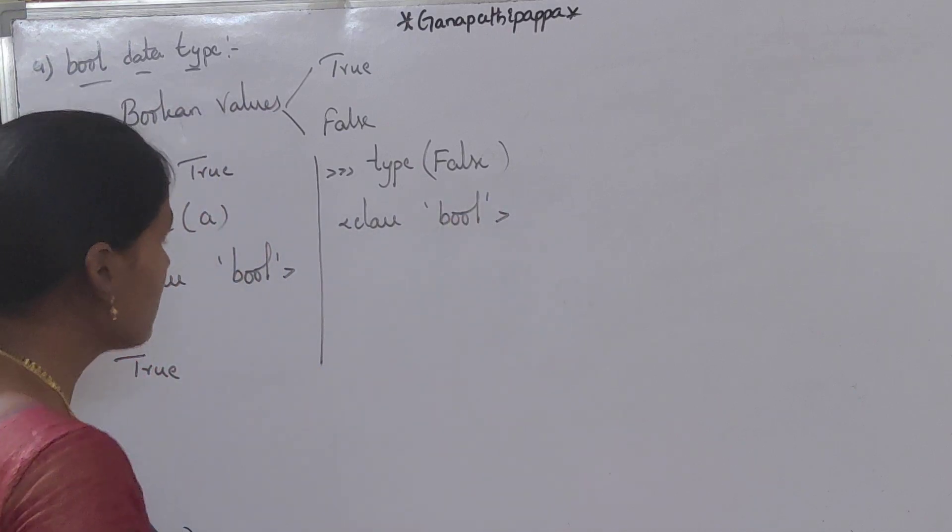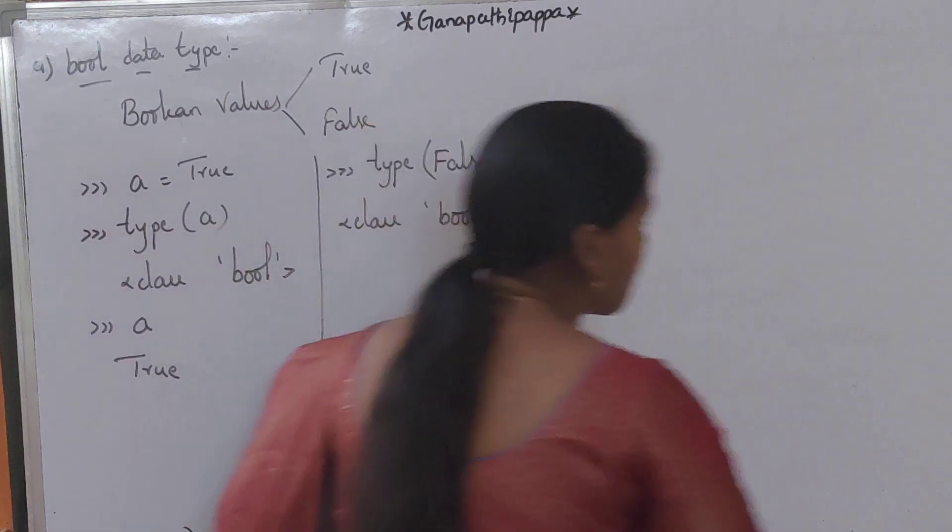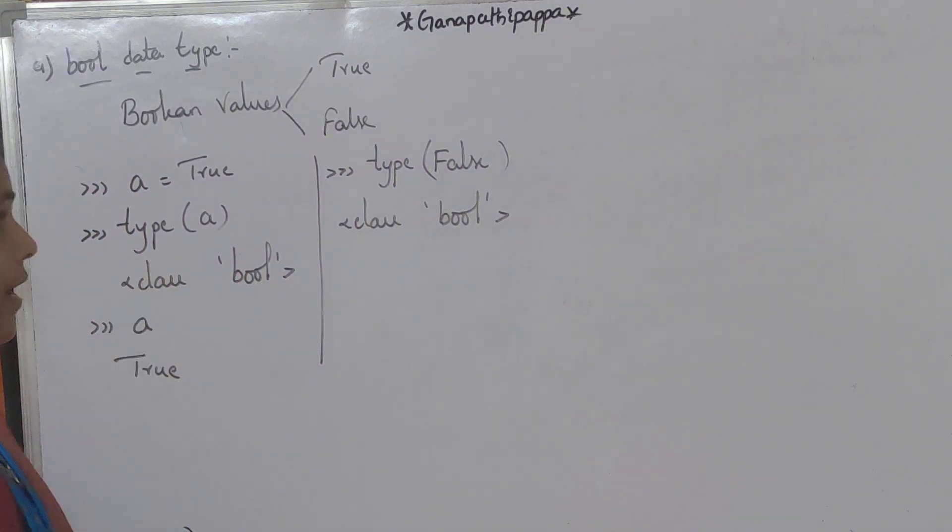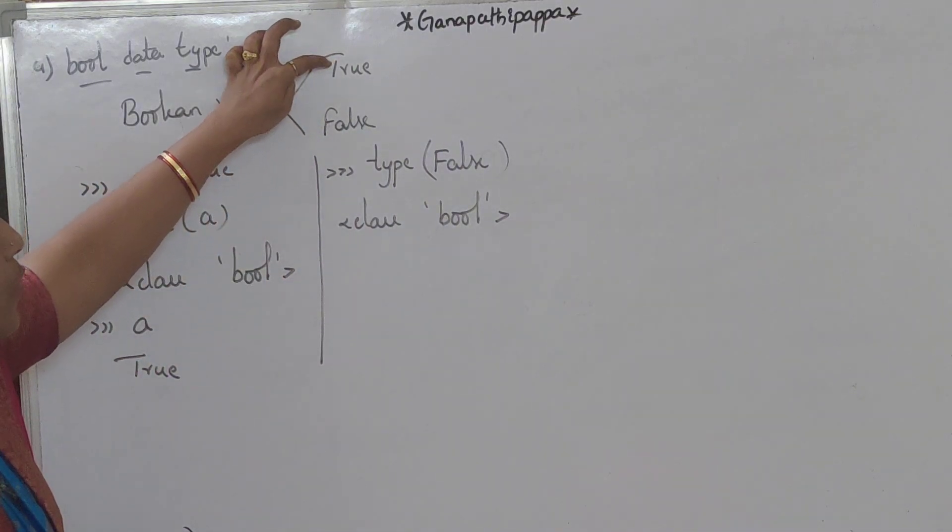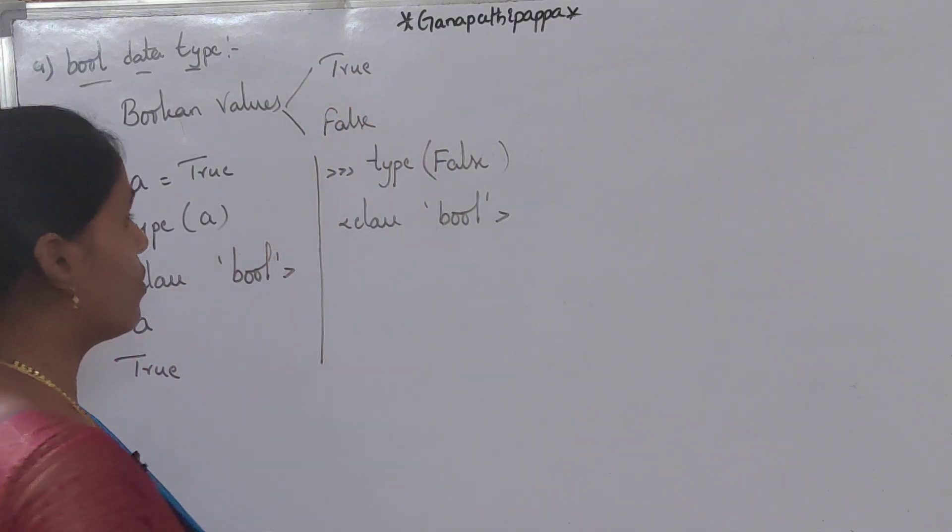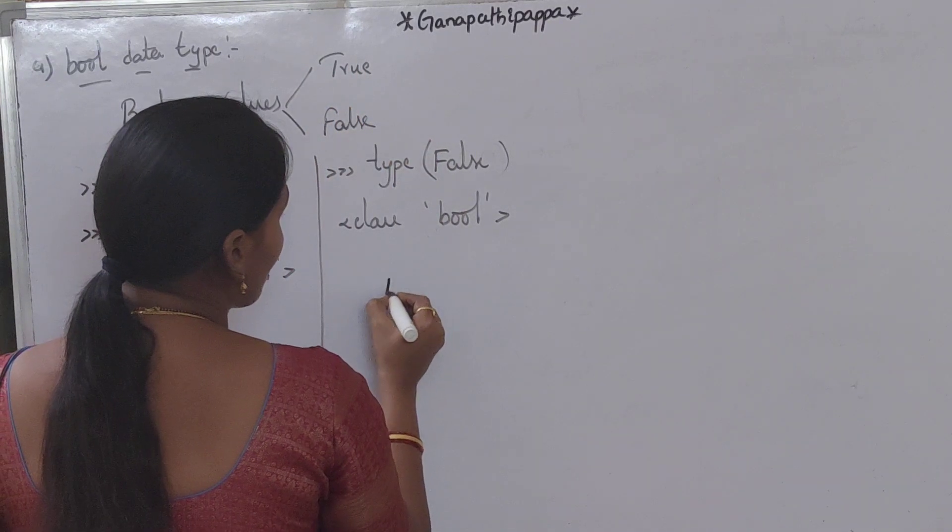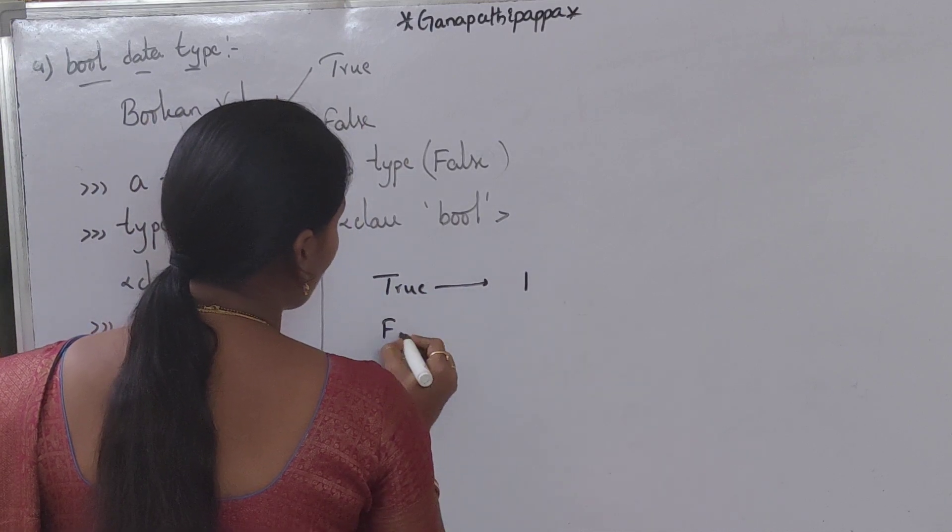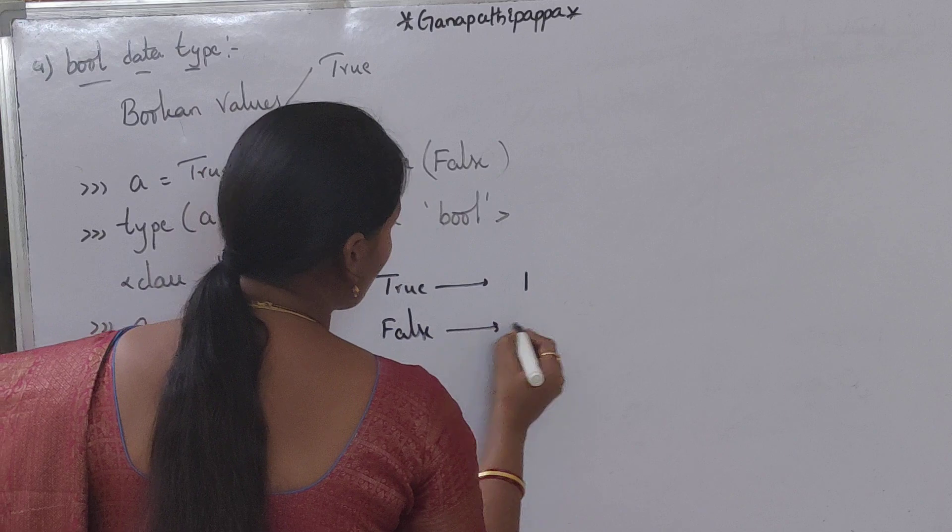This is the boolean data type and internally true and false are treated as 1 and 0. Internally, true is 1 and false is 0.